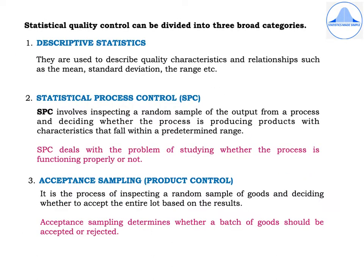Statistical quality control can be divided into three broad categories. The first is descriptive statistics, which are used to describe quality characteristics and relationships such as the mean, standard deviation, the range, etc.